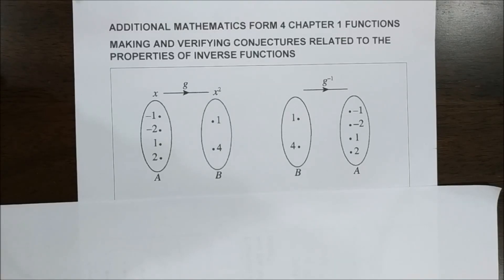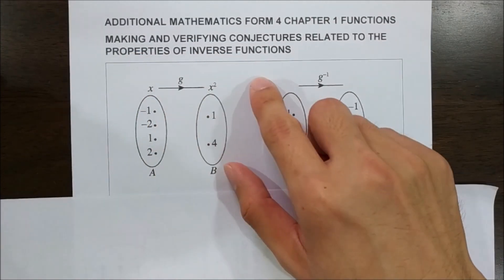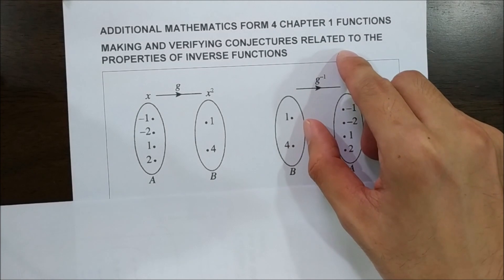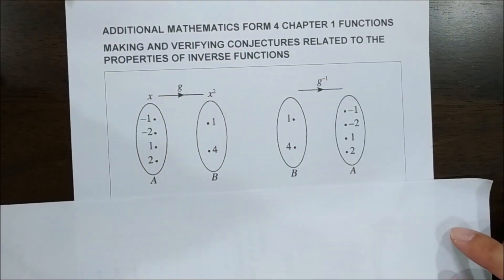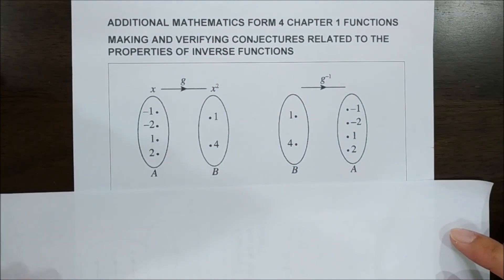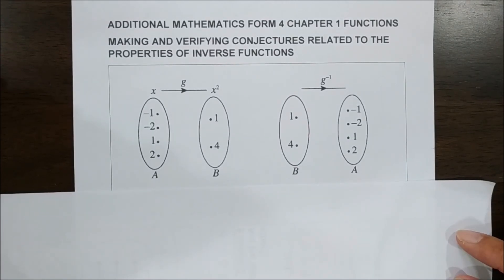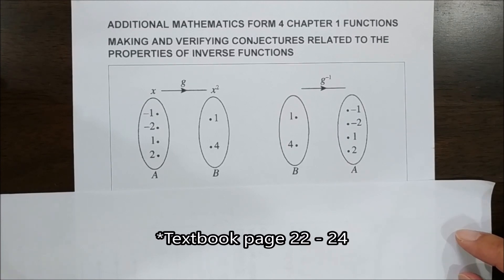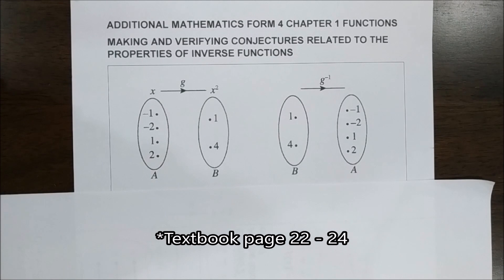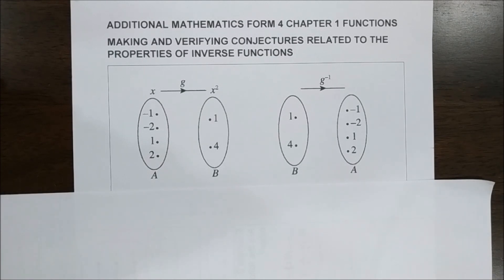Hello everyone. Today we're going to look at Additional Mathematics Form 4, Chapter 1: Functions. One of the subtopics is making and verifying conjectures related to the properties of inverse functions. We have 4 conjectures to look at, from the Additional Mathematics textbook pages 22 to 24. We'll start with the first activity, which relates to the first conjecture.